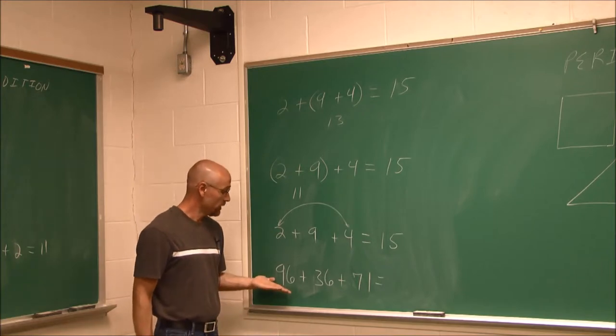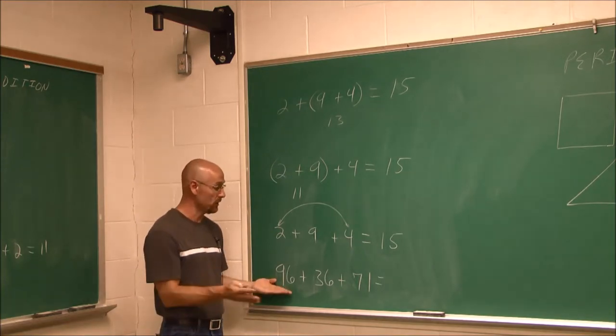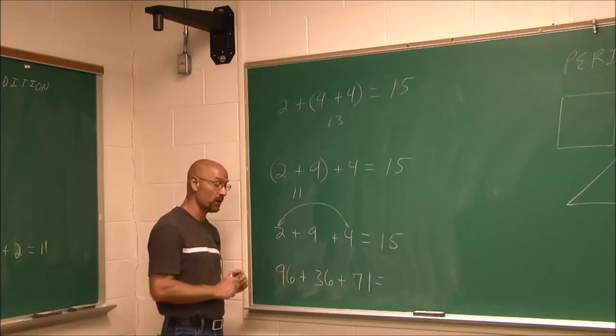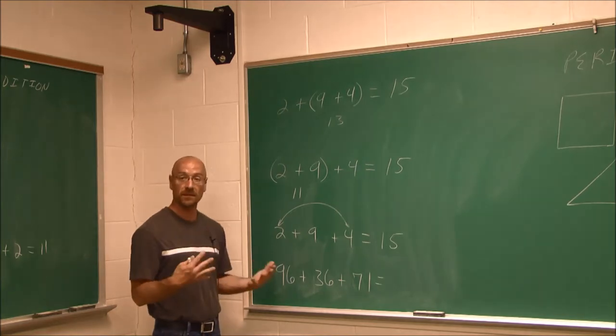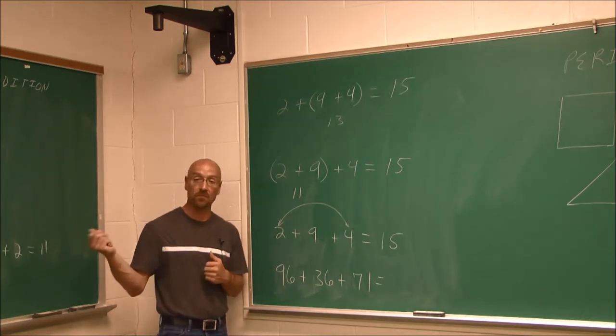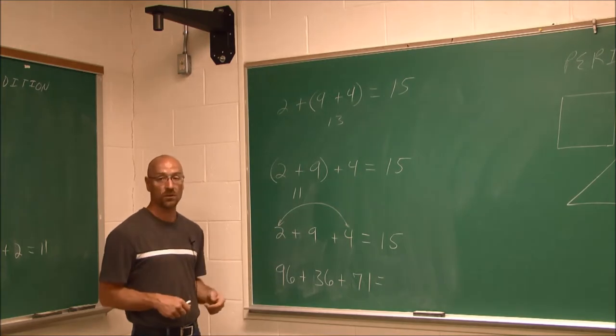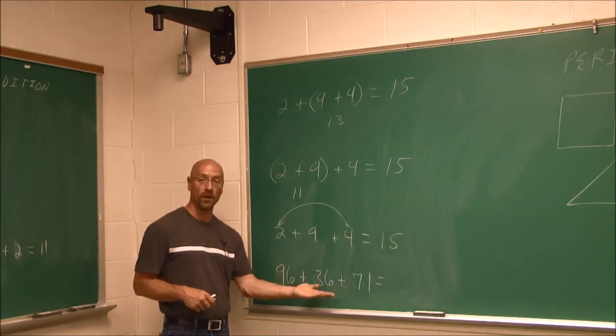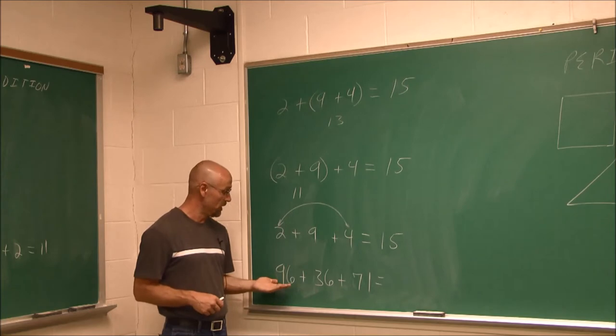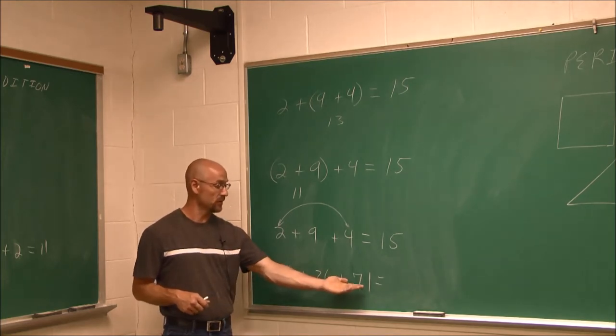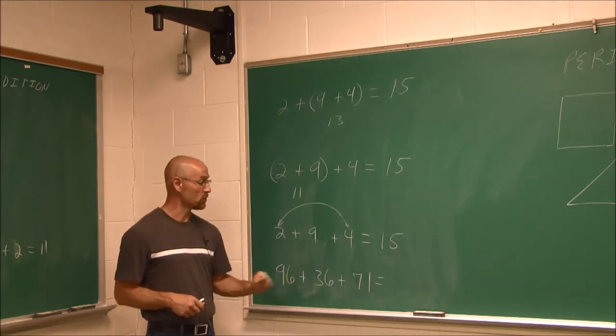So here's your opportunity to pause the video and try one for yourself. It's more complex, but it gives you the example of our first example that we worked through and the associative property. Try it a different combination of ways to find out what the sum of 96 plus 36 plus 71 is. So try that for yourself.